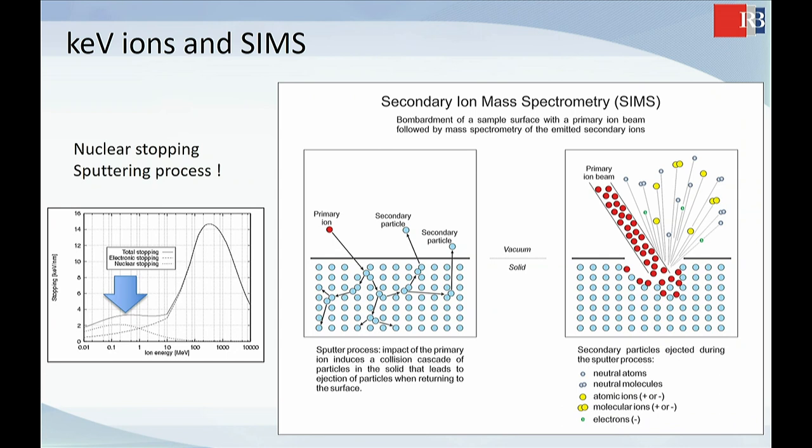And if you look at this part, what is nuclear stopping means that the primary ion makes a lot of scattering with the atoms at the surface layers of the sample. And some of these ions are ejected into the system, into the vacuum.